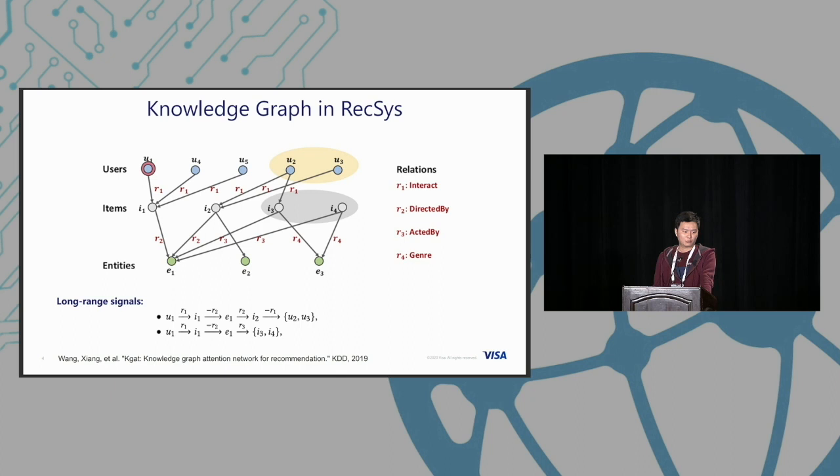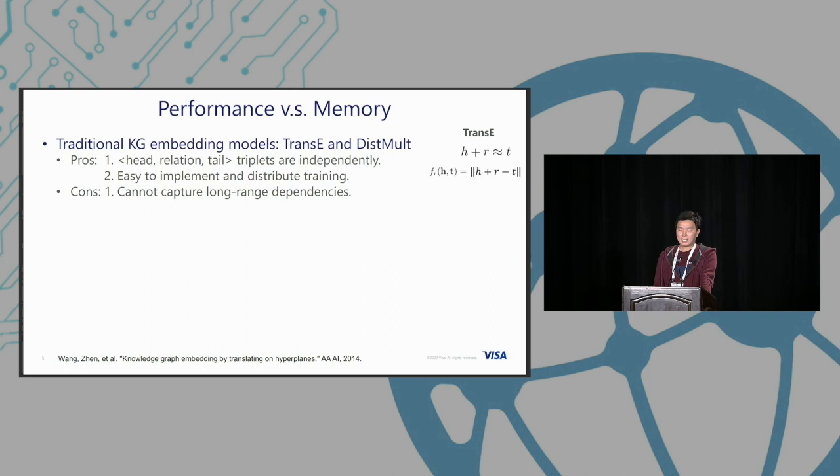This is not our contribution in this work, just some background. In real production, we always need to care about performance and memory. For example, in a company like Visa we have a big knowledge graph with different merchants, merchant attributes, cardholders, devices, email, phone numbers, and invoice information. It's pretty huge.